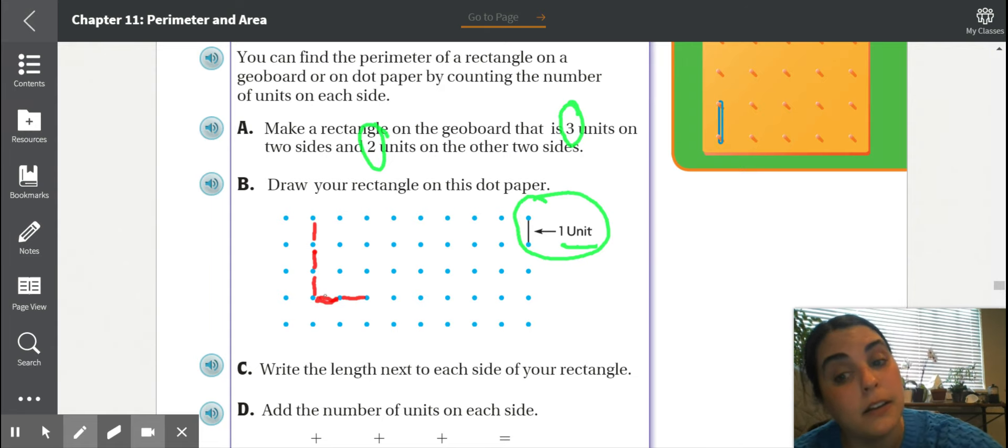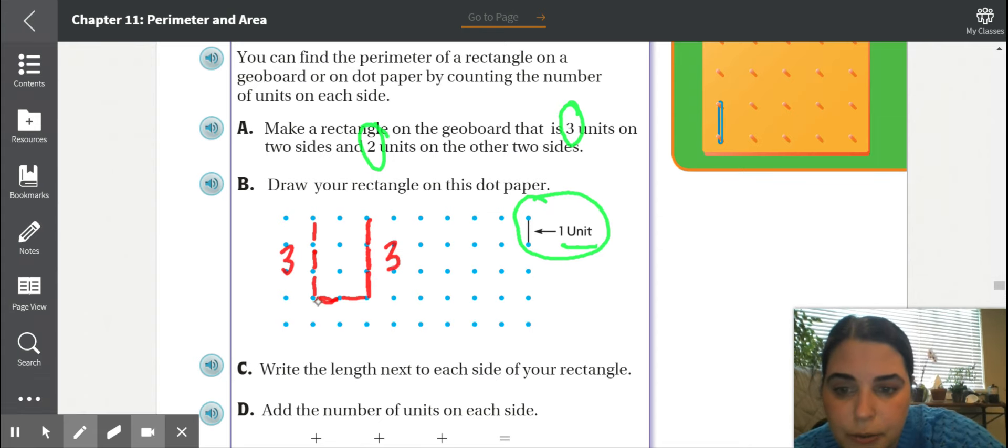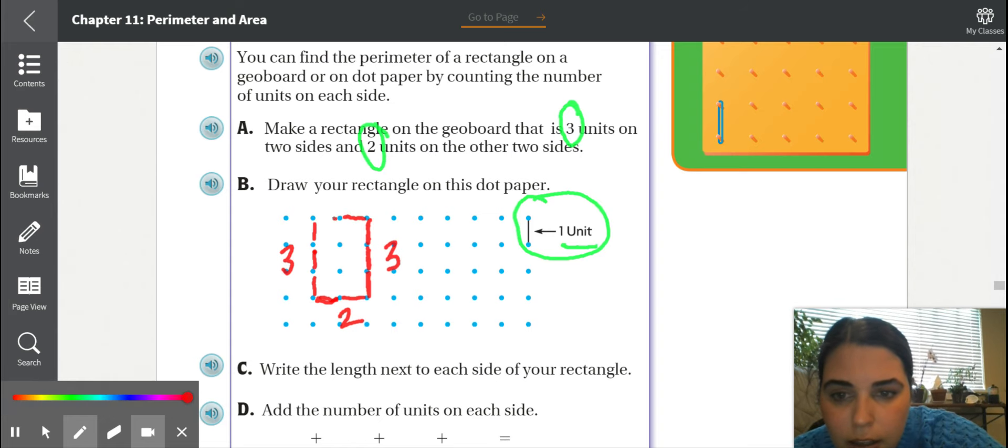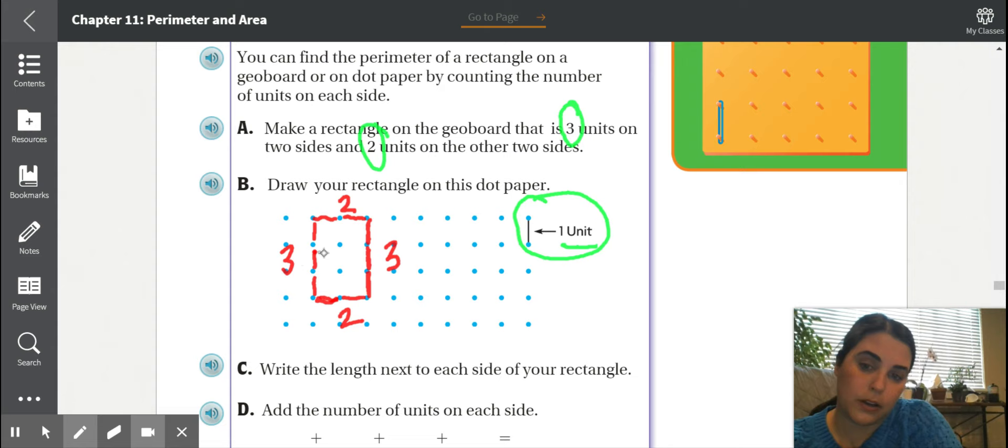Now if we're making a rectangle, I know that this side needs to be the same length as this side. So if this side is three, then this side needs to be three. Let's count. One, two, three. And if this side is two, one, two, then what is this side going to be? If you're saying two, that's correct. One, two. Did we follow the rules? Yes. Make a rectangle on the geoboard that is three units on two sides, so here are the three units, one and then two. And then two units on the other sides.